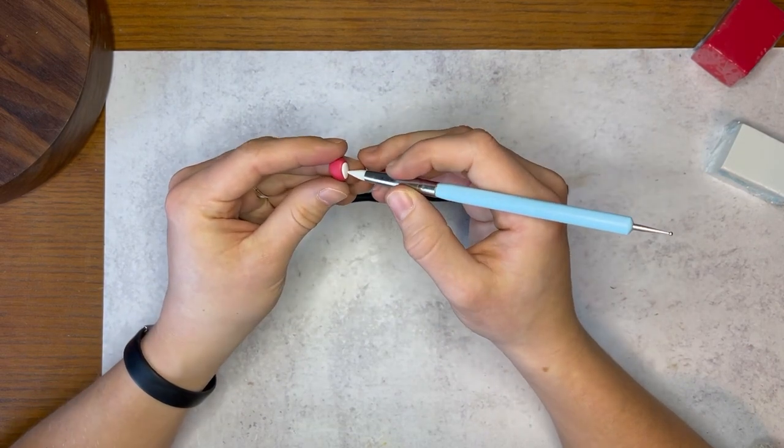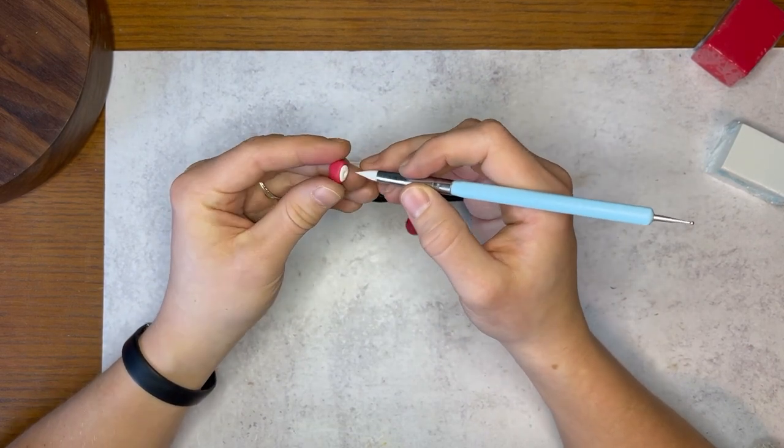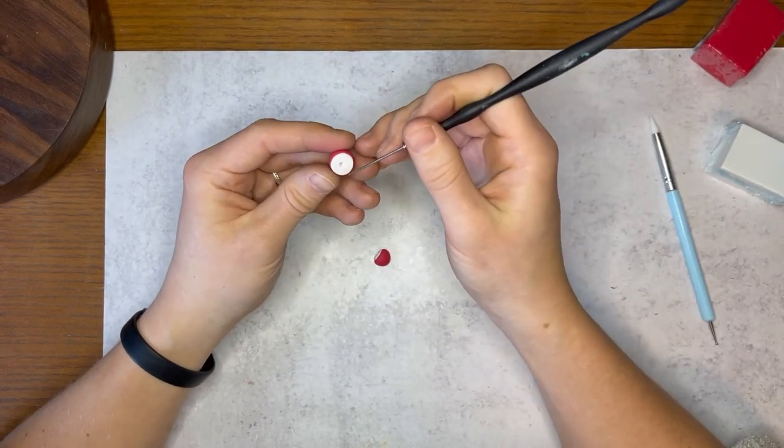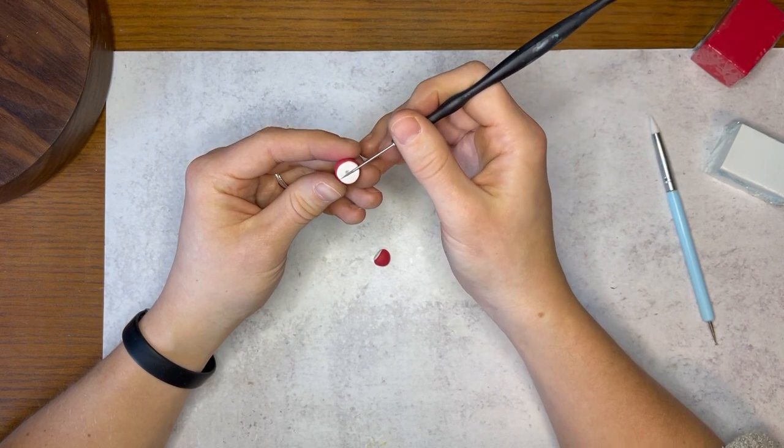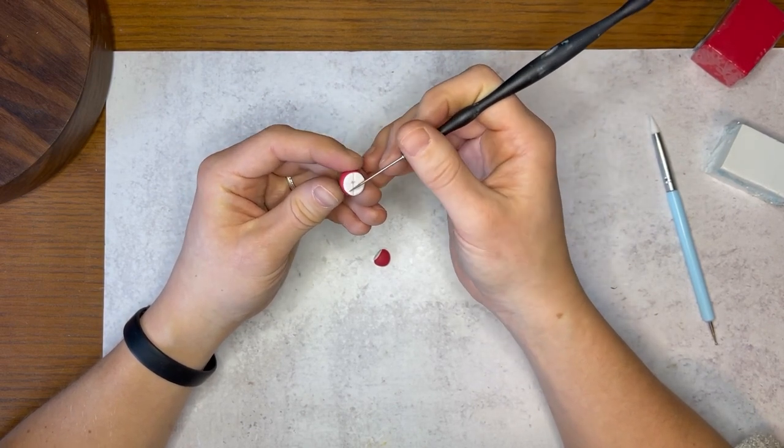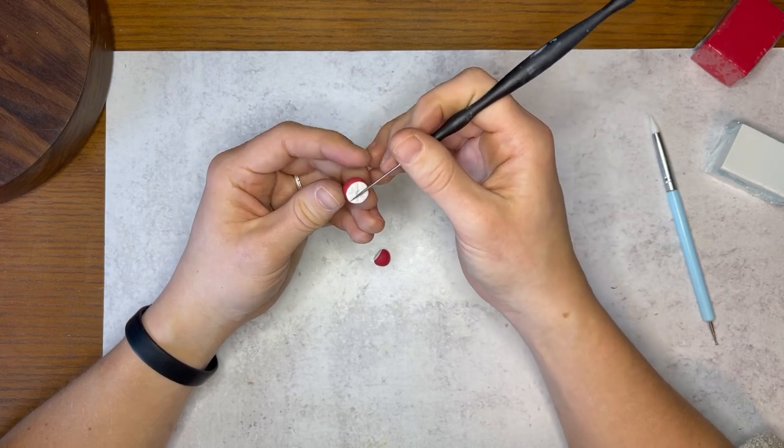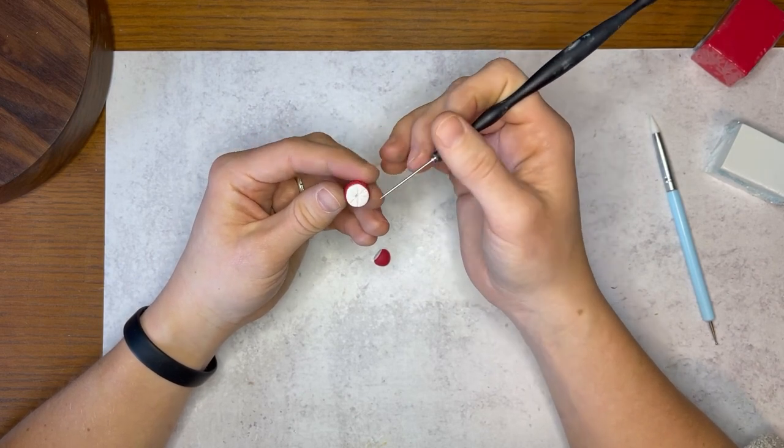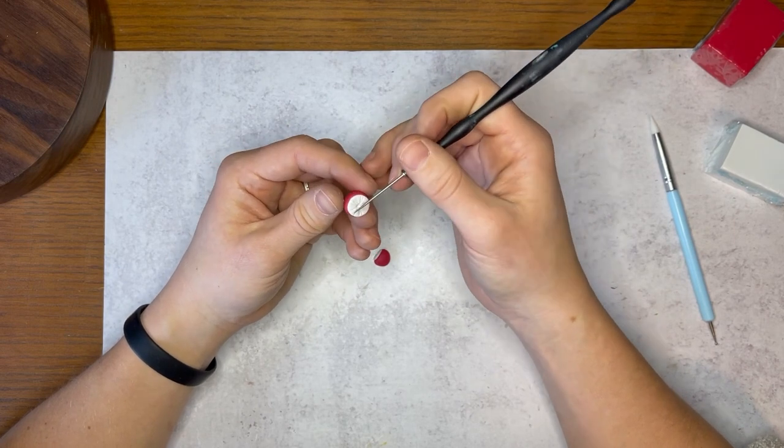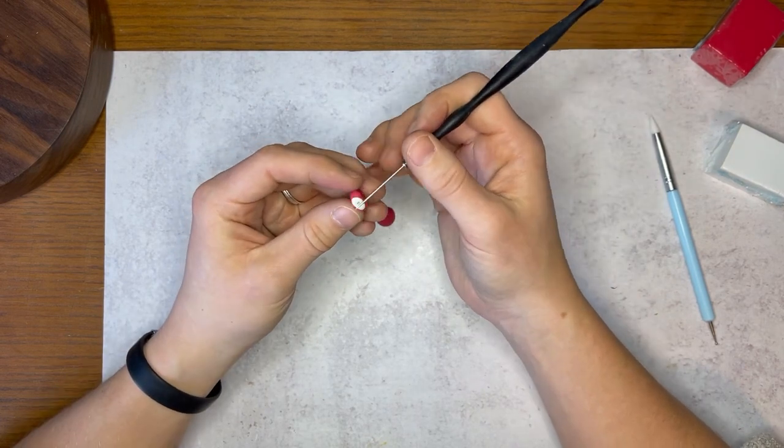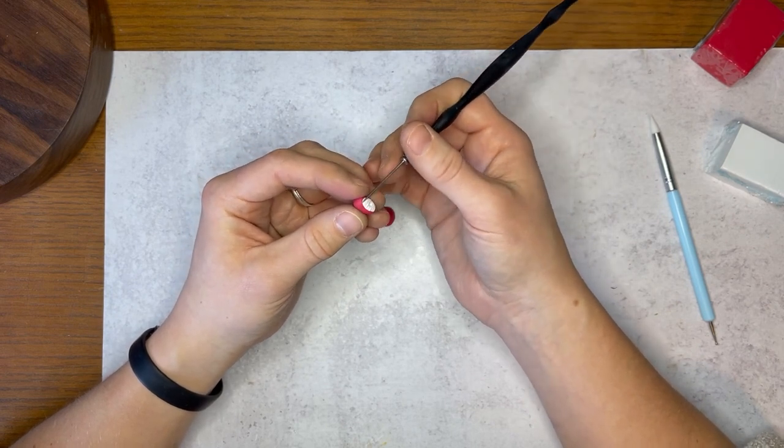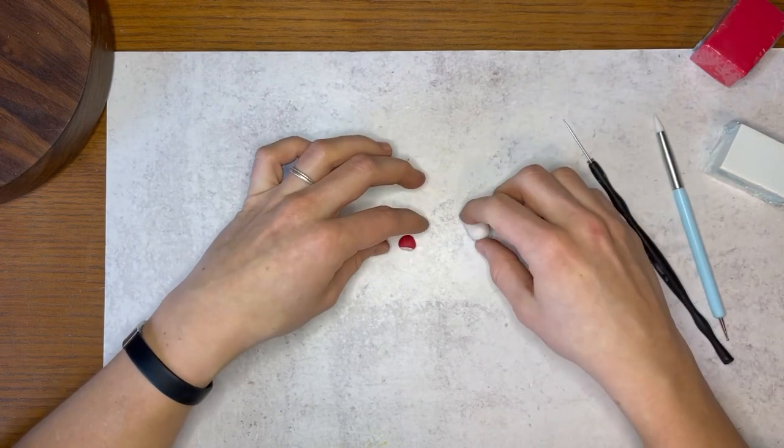Then we will take our sculpting tool, which can be any number of things, and just make a little indent there at the center of the bottom. Then we'll take our potter's needle or sculpting tool toothpick and press lines across from one edge of the base of the white to the other. You don't have to make them even across either. You can make them different sizes. If it's earrings, you'll want to make two of these, but if it's a pin, you can just keep it at one.